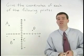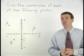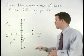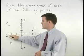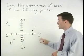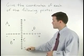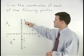When finding the coordinates of a given point, be very careful with your signs. Remember that on the x-axis, left means negative and right means positive. And on the y-axis, down means negative and up means positive.